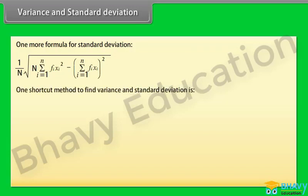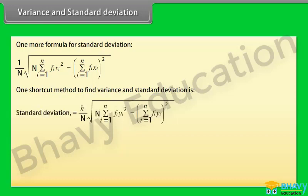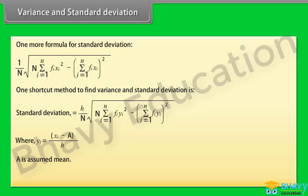A shortcut method to find variance and standard deviation uses: standard deviation equals (h/N) multiplied by the square root of [N·summation of fi·yi² minus (summation of fi·yi)²], where yi equals (xi minus a) divided by h, a is the assumed mean, and h is the common factor.